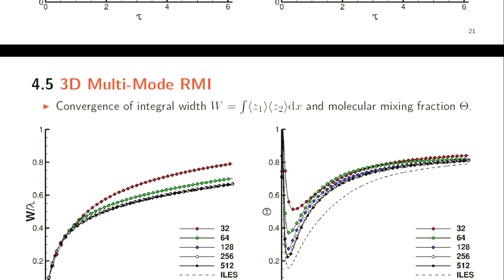Looking at convergence of both the integral width, which is defined there, as well as the molecular mixing fraction again, we see that both the original inviscid simulations and our new viscous simulations all collapse to the same curve for the integral width. These are all non-dimensional - this is non-dimensional time and the integral width is non-dimensionalized by the average wavelength. Whereas for the molecular mixing fraction, we almost achieve a fully converged solution at 512³ grid points. We also see that the viscous simulations mix a lot quicker than the original inviscid simulations.